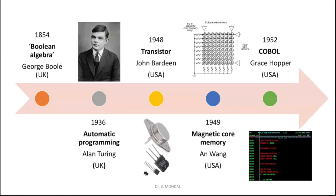In 1854, Boolean algebra came — George Boole in the UK invented Boolean algebra, which covers the addition of binary numbers and other arithmetic operations. Then in 1936, automatic programming was proposed by Alan Turing — many of you have heard of Alan Turing, who is credited as the father of theoretical computation.